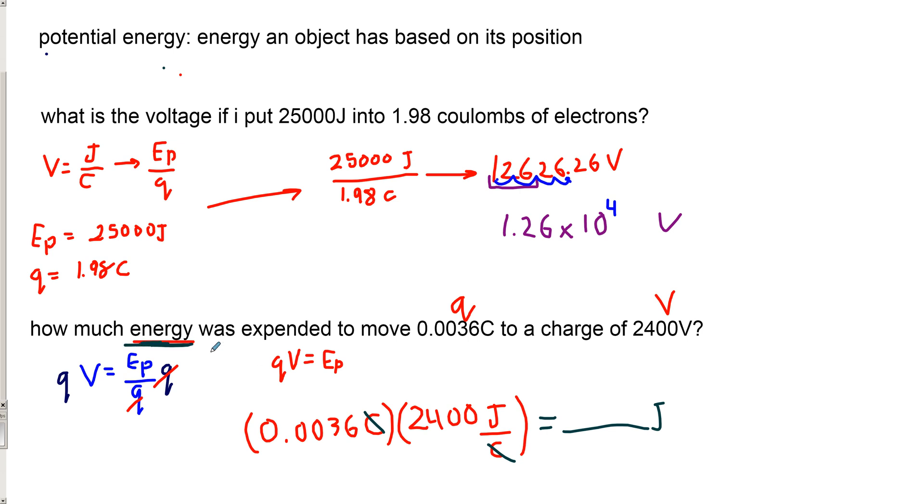So quick little bit of math. 0.0036 times 2,400, we get 8.64 joules. My only issue is I only have two sig digs. So I'm going to have to burn one of those sig digs off or one of those digits. So not 8.64, we are going to get 8.6 joules. And that's our answer. So 8.6 joules.